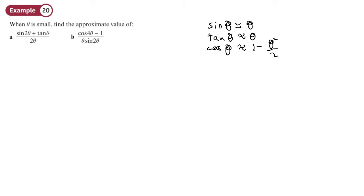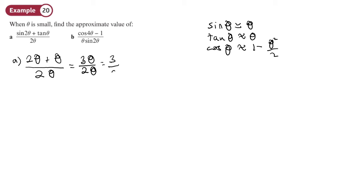All we need to do is substitute. In part A we have sine 2 theta, which we can approximate to 2 theta. Tan theta can be approximated to theta. And all of that is over 2 theta. So that becomes 3 theta over 2 theta, which is 3 over 2. If theta is small, you could approximate that whole expression to 1 and a half — 3 over 2.